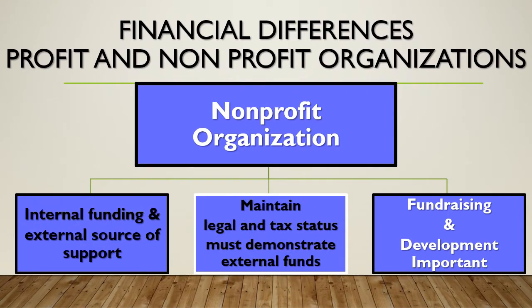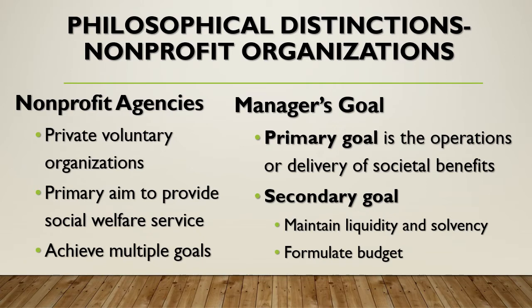Now let's look at the non-profit organization. Here we have internal funding and external sources of support. To maintain our legal and tax status, we must demonstrate where we get our external funds. This includes things like fundraising and development, which are very important to the overall viability of the non-profit organization. We can look at the philosophical distinction: non-profits are a private, voluntary organization where the primary aim is to provide social welfare services and achieve multiple goals.